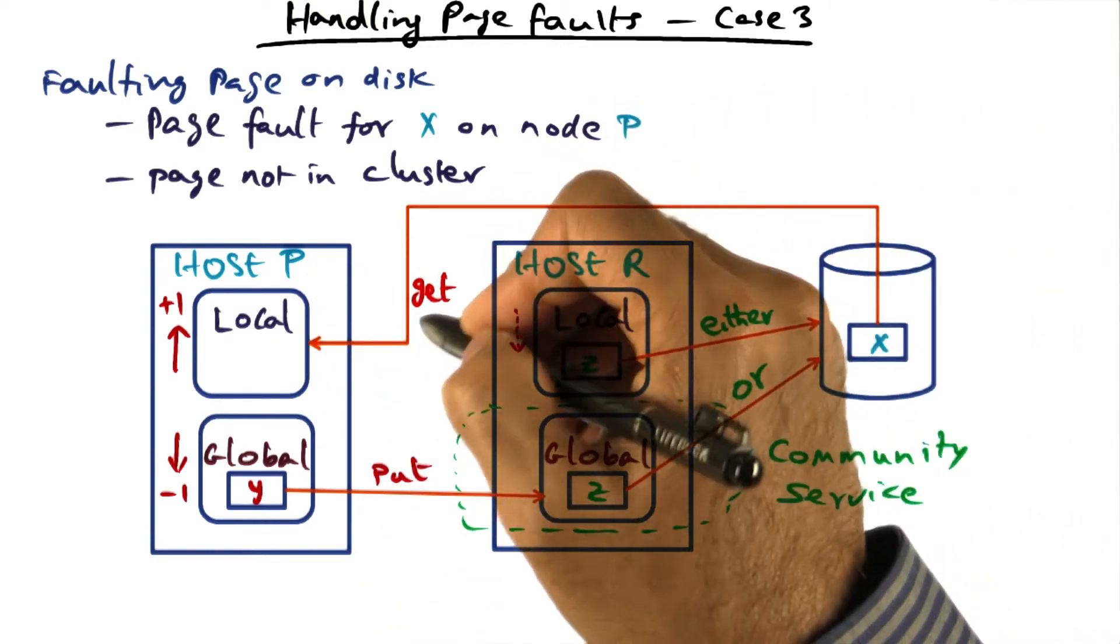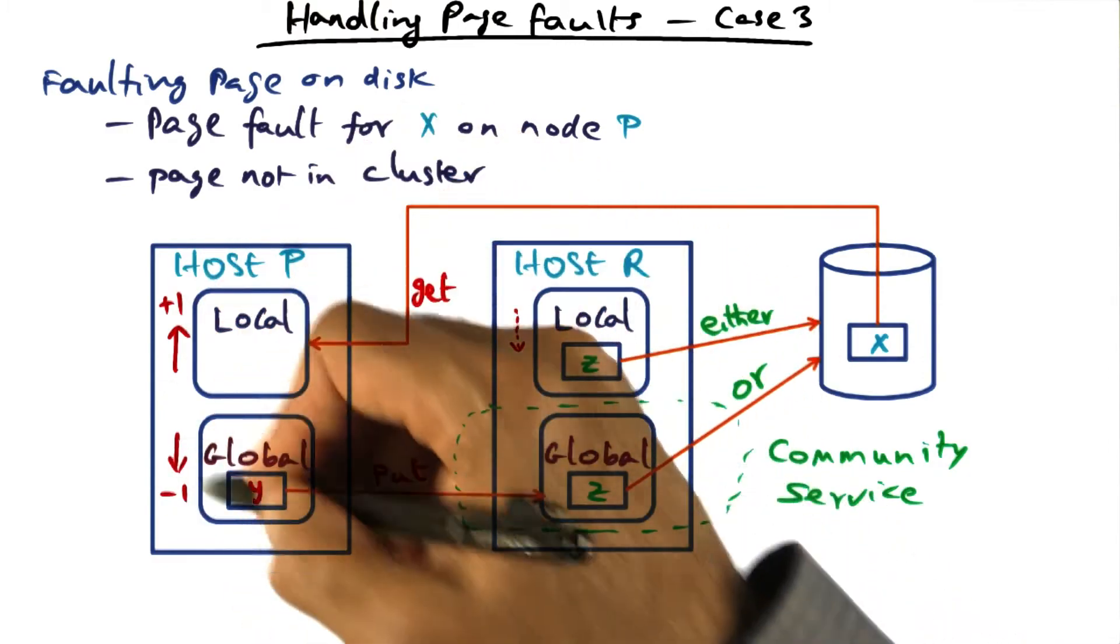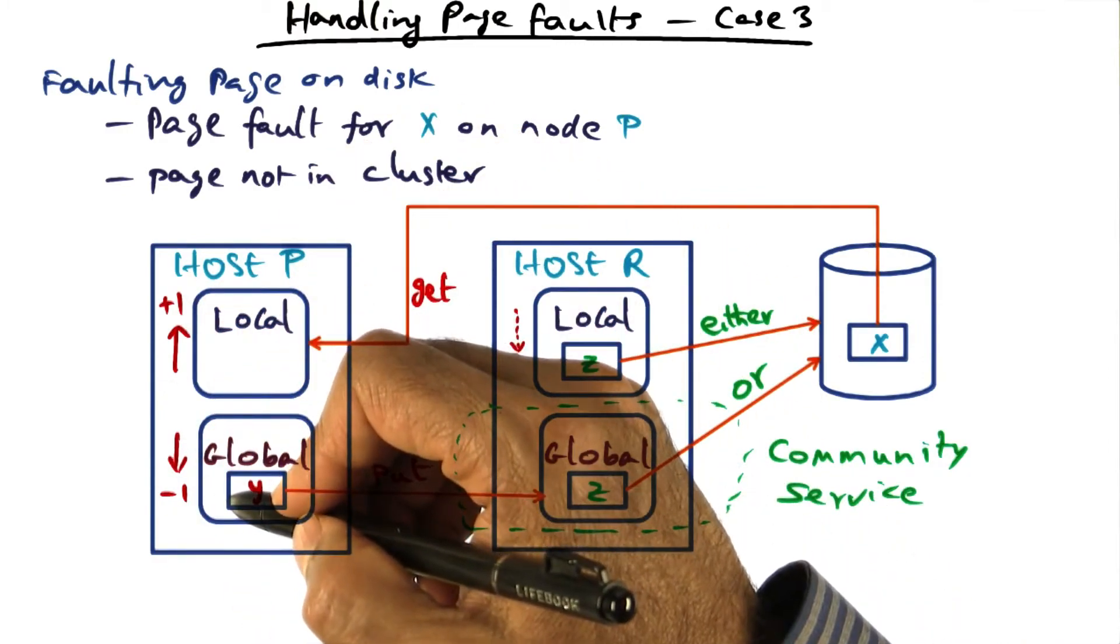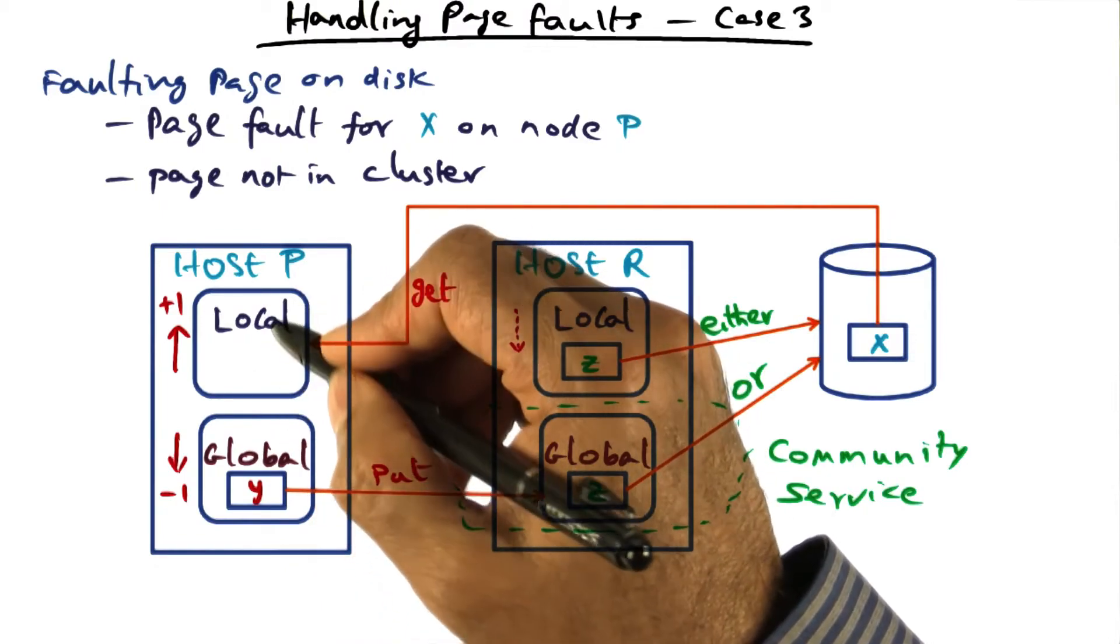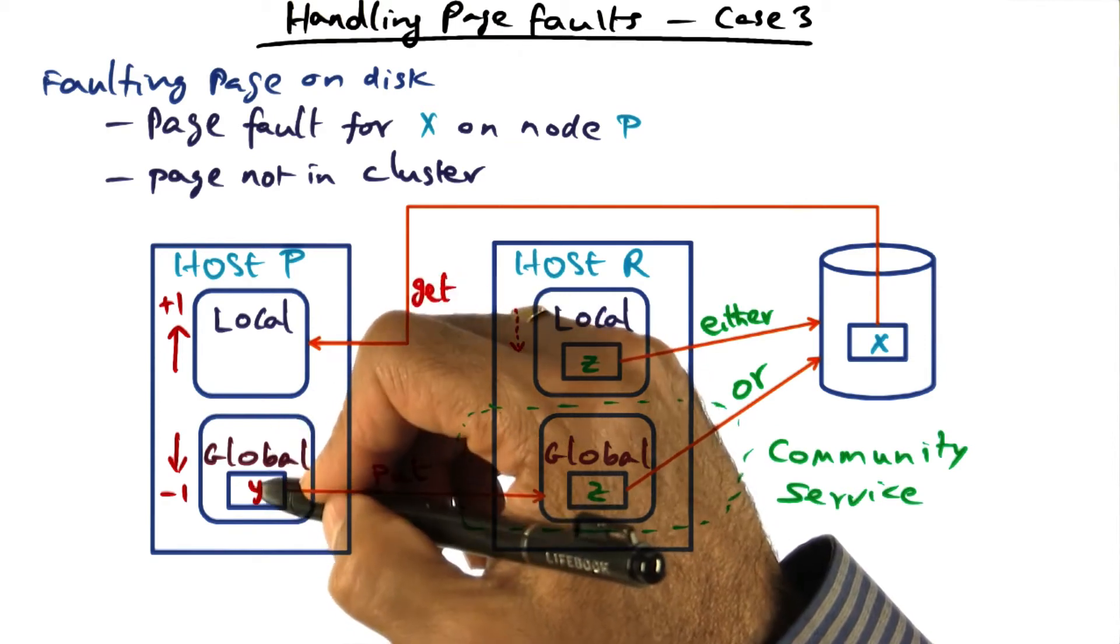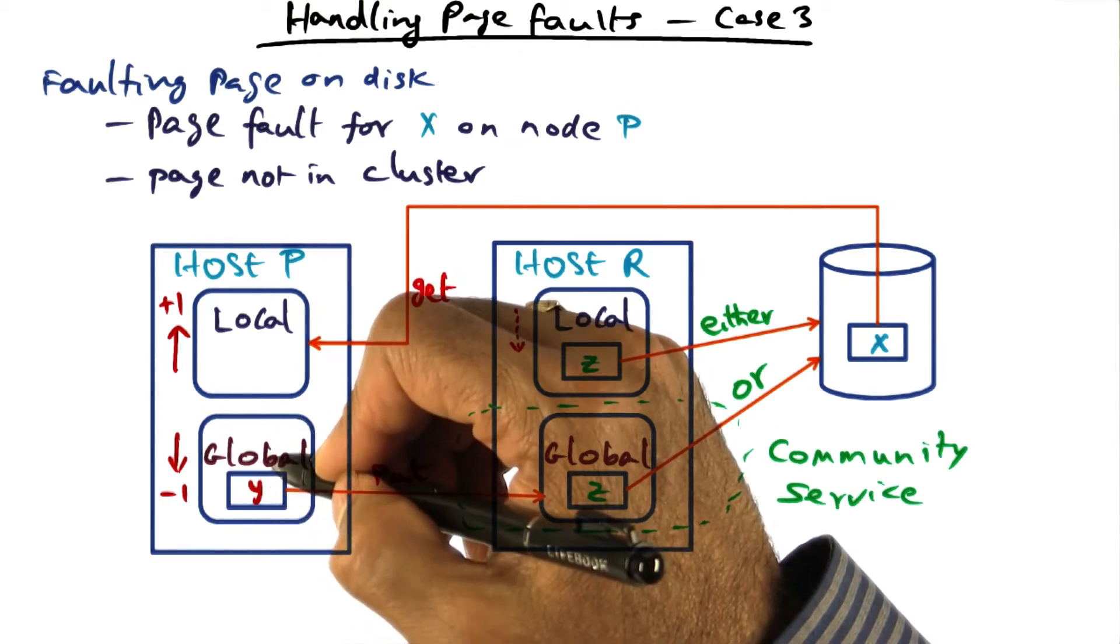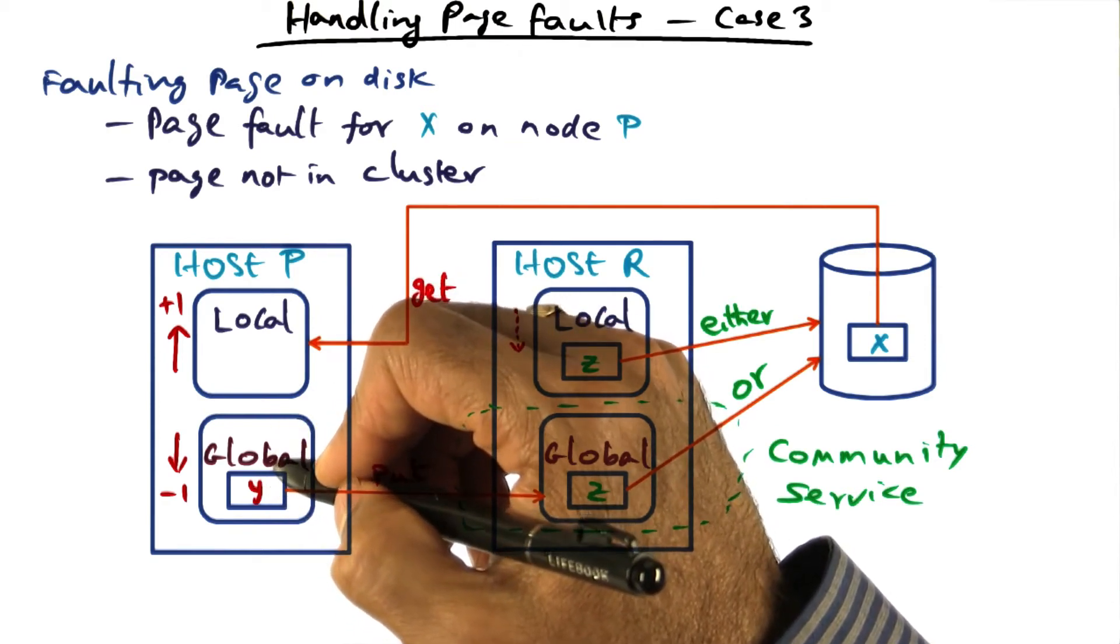And we're going to fetch it, which means that the working set on node P is growing, similar to the first case. And so the local part is going to go up by one. In order to make room for that, I have to necessarily shrink the global part as in the first case. So I'm going to shrink that global part by one.